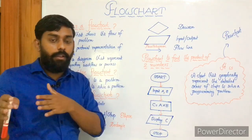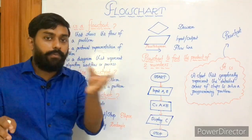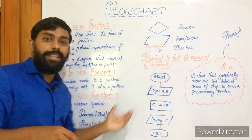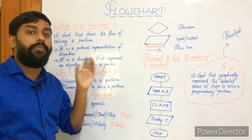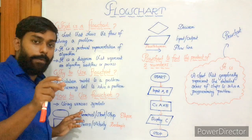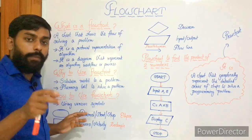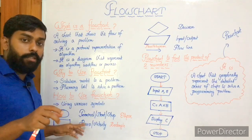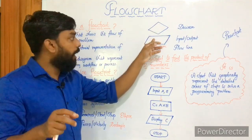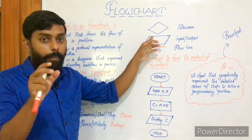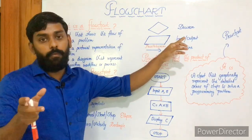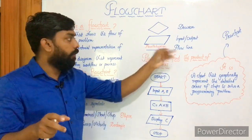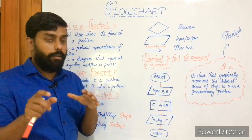Finally, the arrow or flow line shows the flow of the process — the flow of the task being solved. So the symbols used to construct a flowchart are: terminal or start/stop (ellipse), process or activity (rectangle), decision (diamond), input/output (parallelogram), and flow line (arrow).